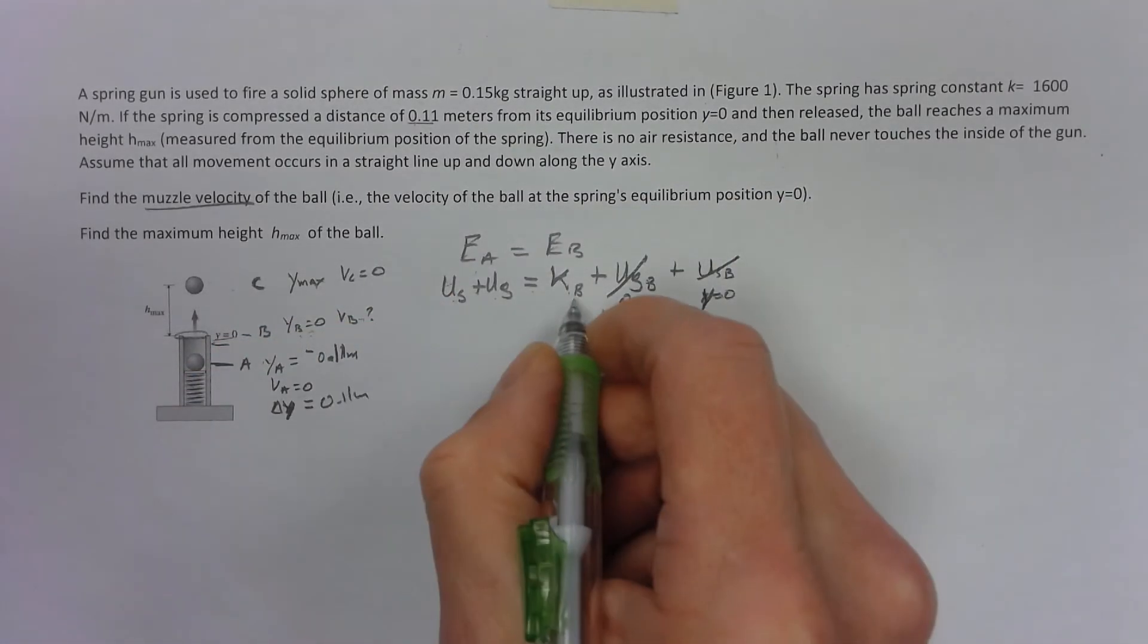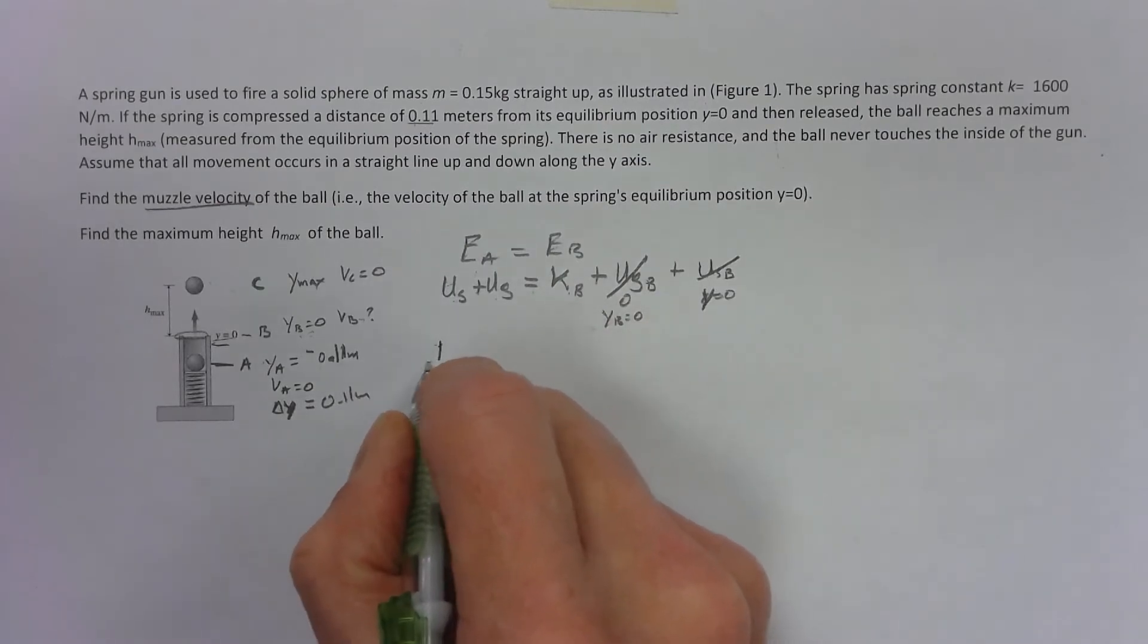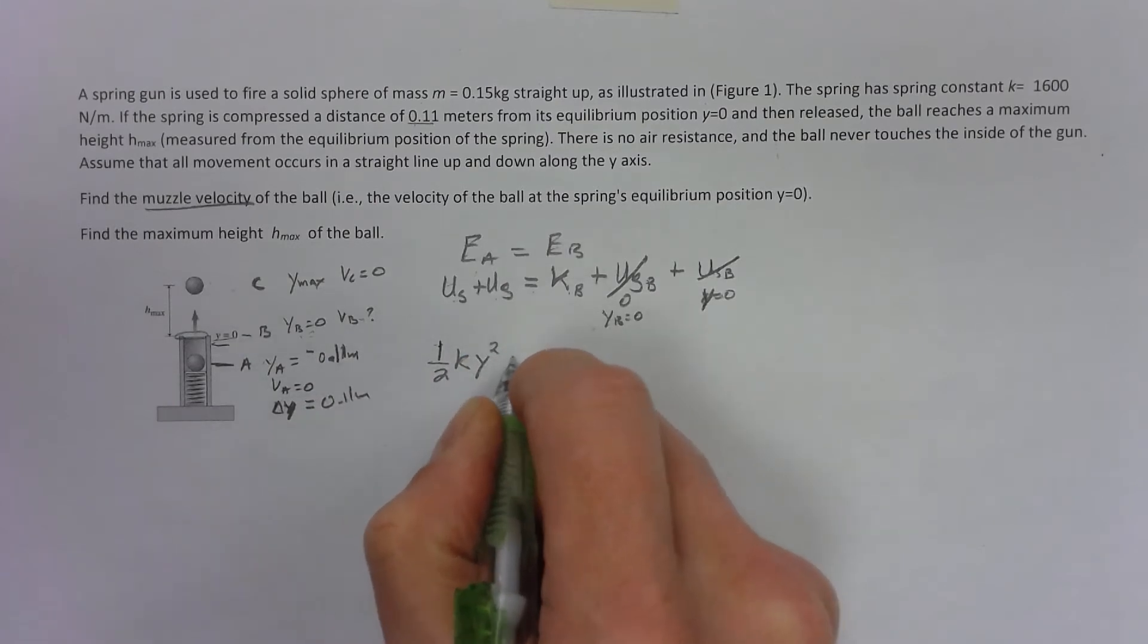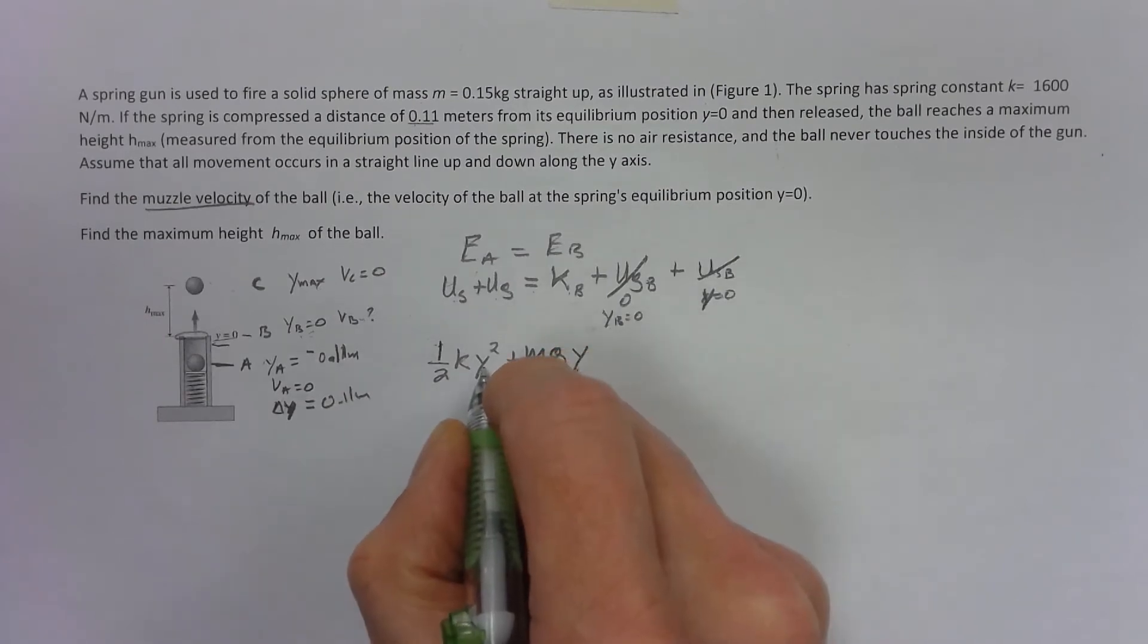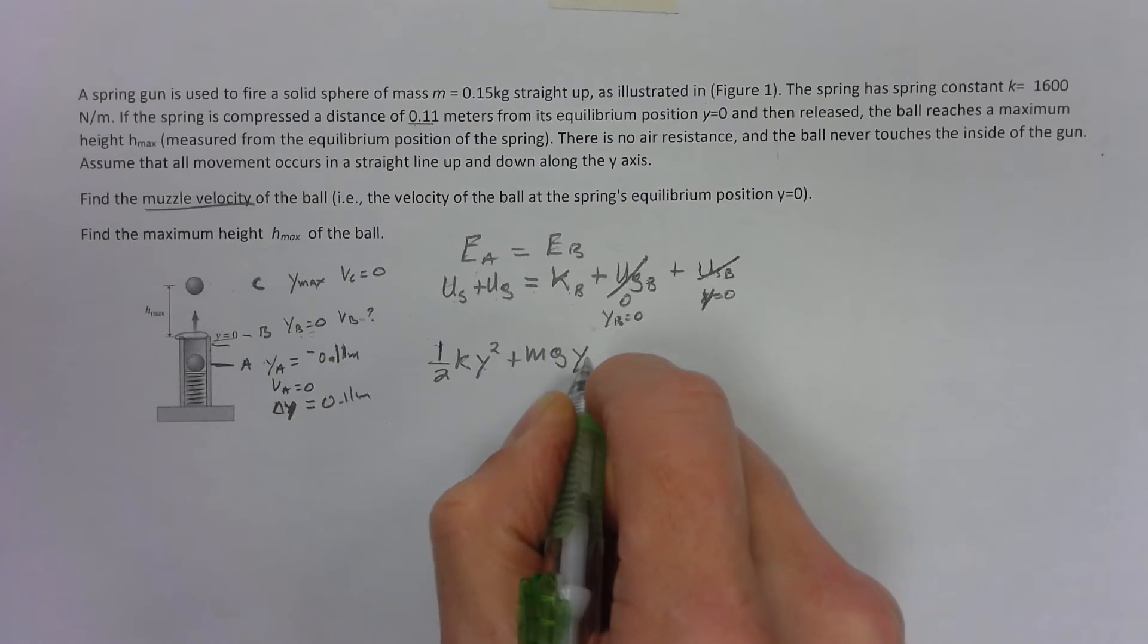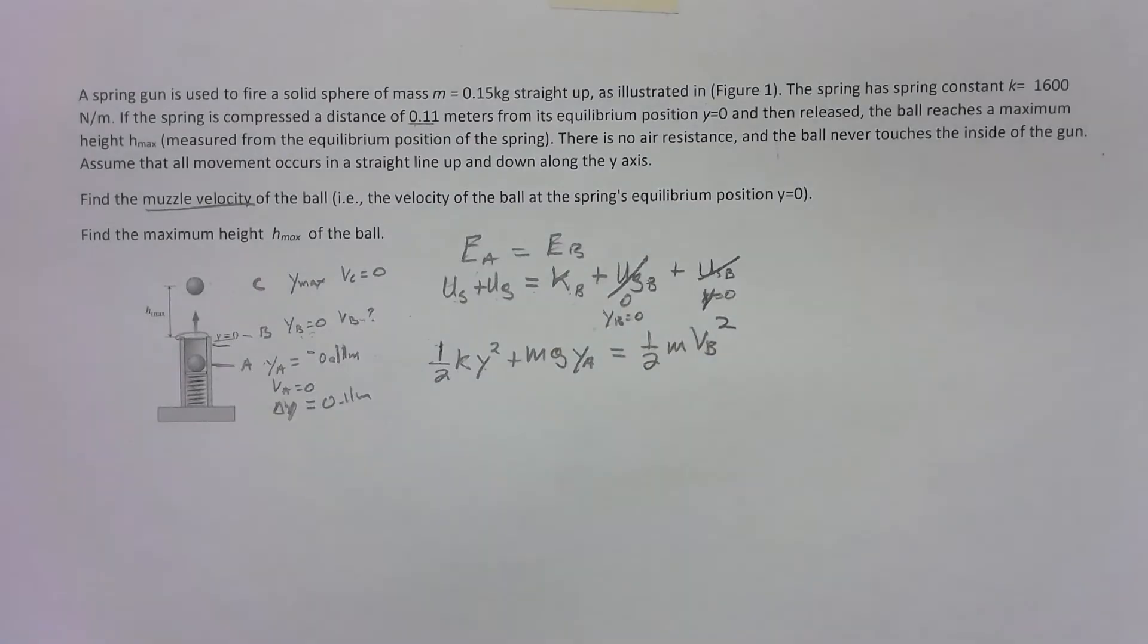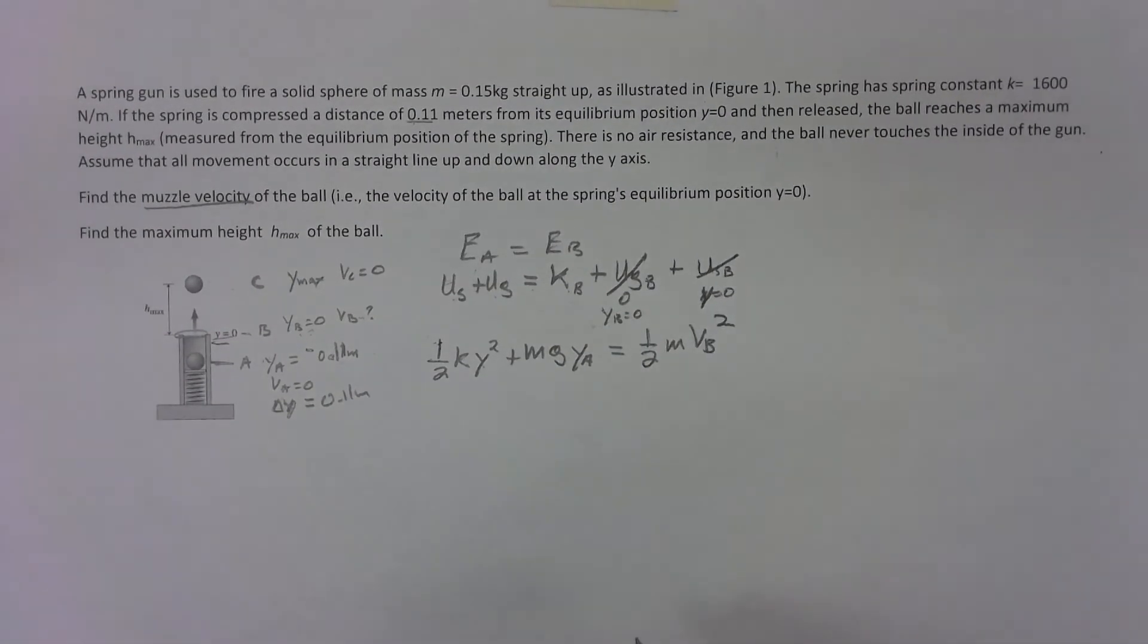We plug those in. Spring energy is one half k y squared, it's in the y direction so I'm going to call it y squared, plus m g y. So that's the y for the spring, this is y at position a, and that's going to equal one half m velocity at b squared.